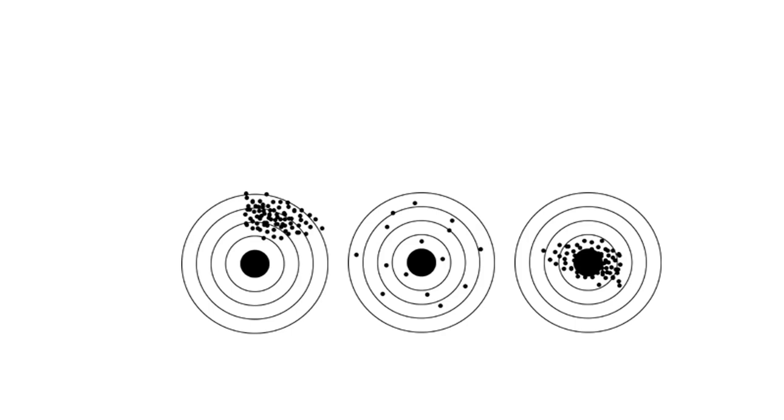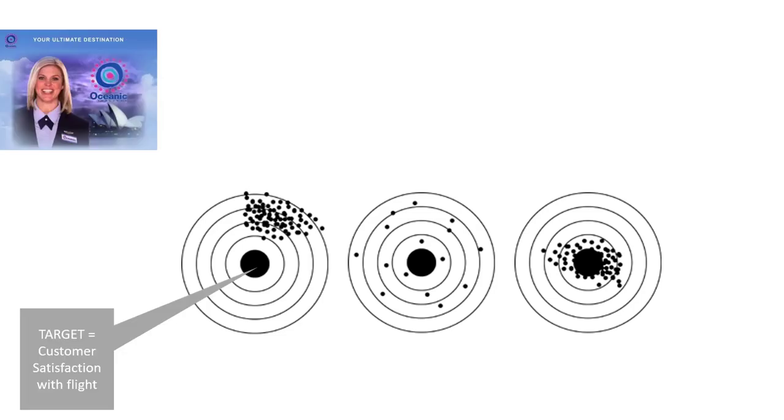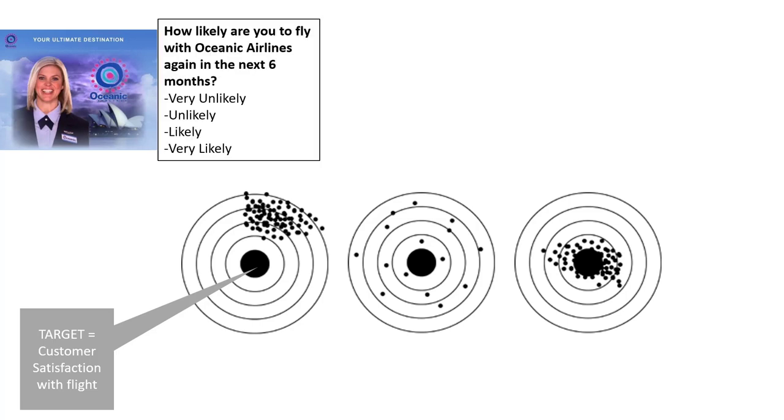Let's see if we can understand the issue of reliability and validity in measurement by way of a more marketing example. Let's imagine that we want to measure customer satisfaction with a recent flight for a consumer of an airline. To do this, we use the following survey question: How likely are you to fly with Oceanic Airlines again in the next six months? Very unlikely to very likely. This is a pretty straightforward question. It would likely generate generally reliable answers.